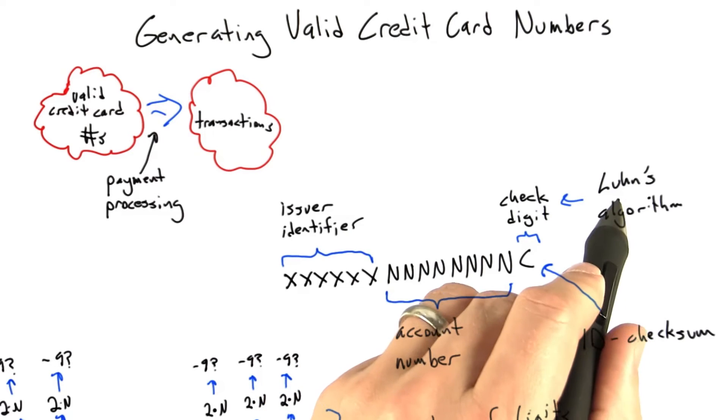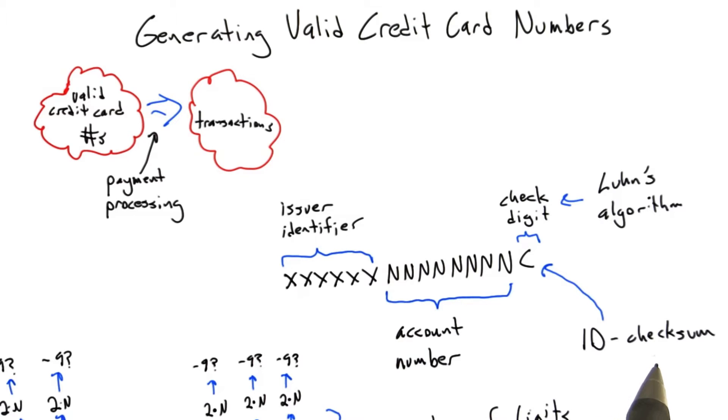It must have a valid checksum digit computed using Luhn's algorithm, plus a procedure for turning a Luhn checksum into a digit that makes the overall credit card number's checksum zero, and therefore valid.